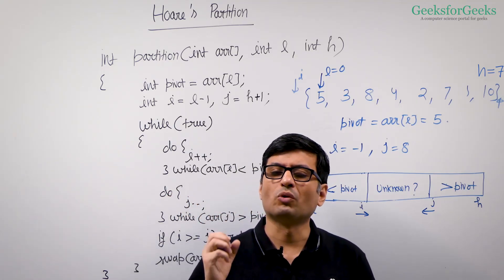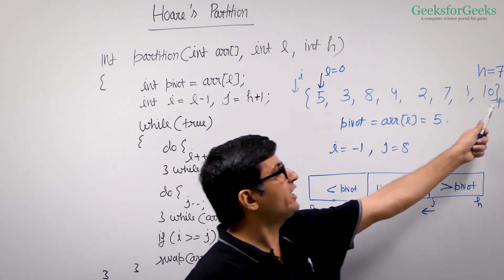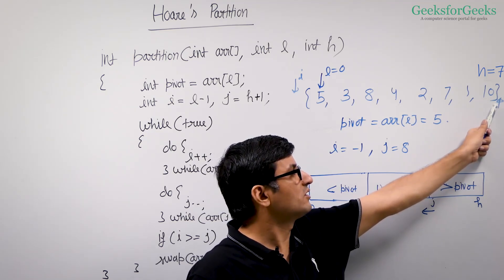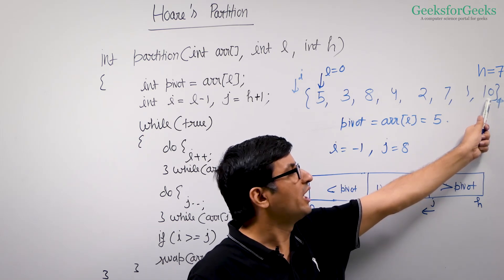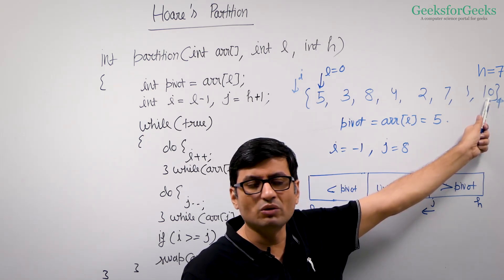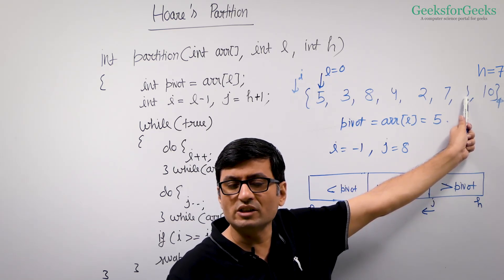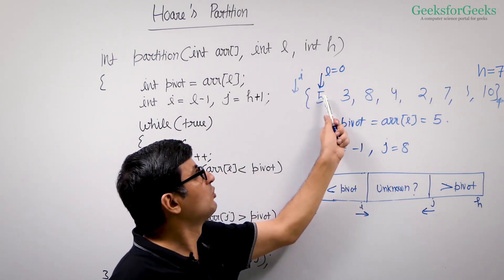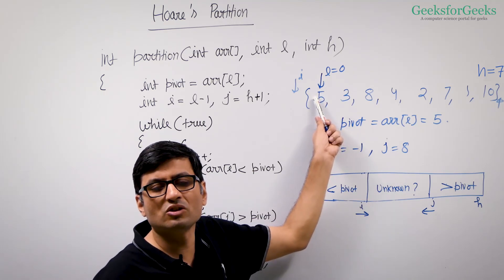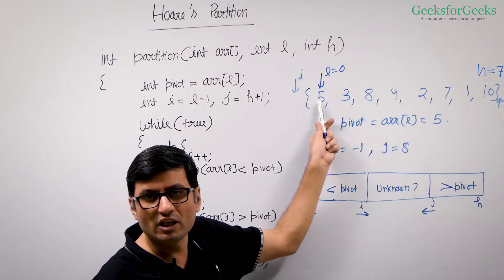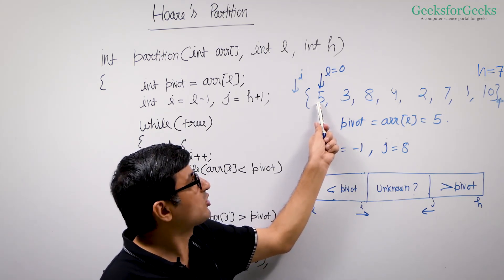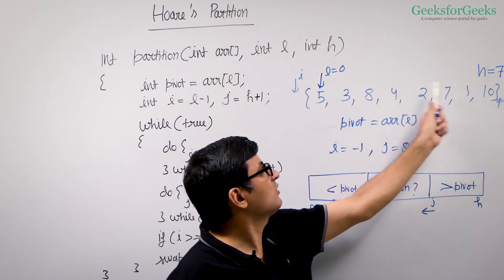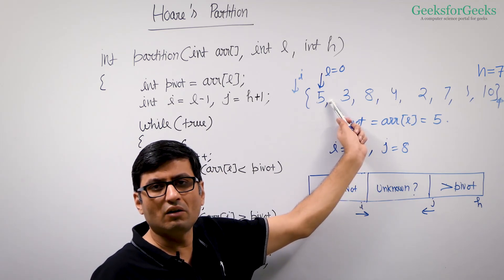That is the idea of this algorithm. You begin from the j side and keep decrementing while elements are greater than pivot. When you begin with j equal to H plus 1, you come to the first element and see it is greater than pivot, so you move ahead. Then you see an element smaller than pivot, so you stop j there. For i, you begin with L minus 1 and stop when you find an element not smaller than pivot — it is the pivot itself. Then you swap those two elements, so five goes there and one comes here, and you continue this way.